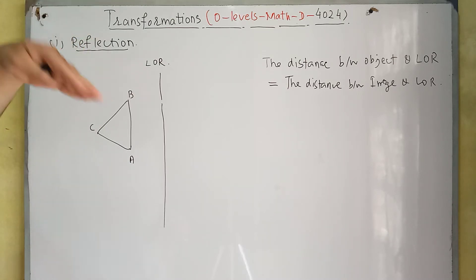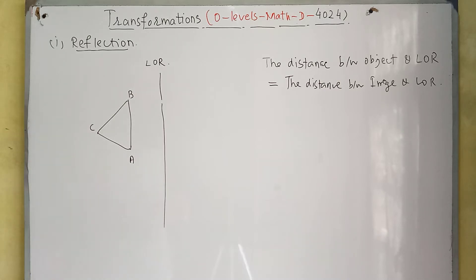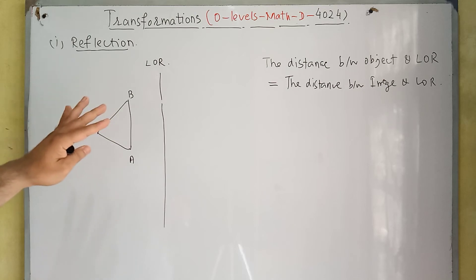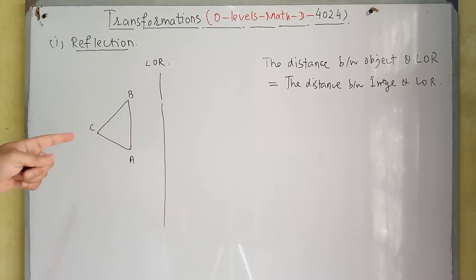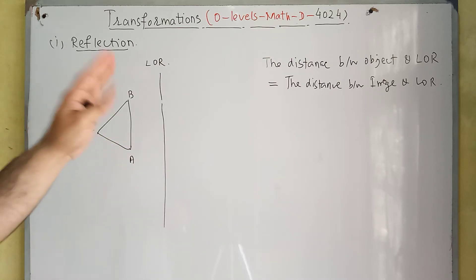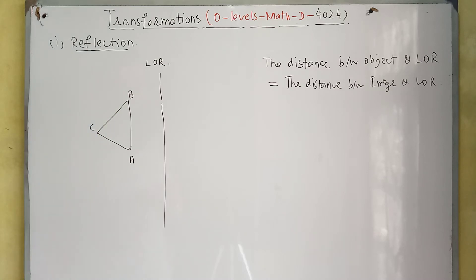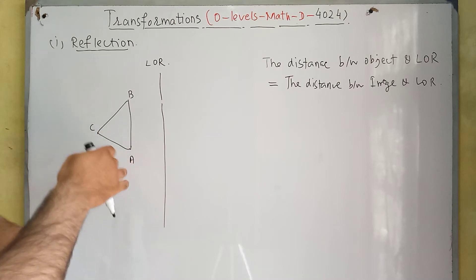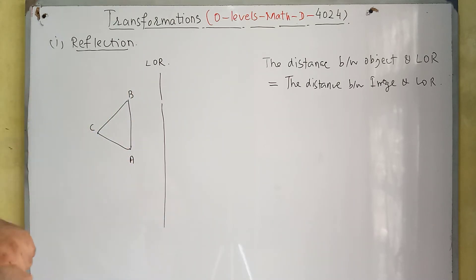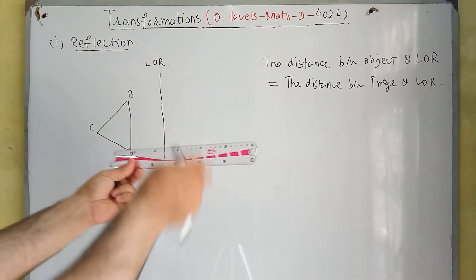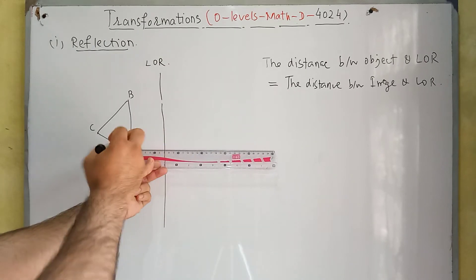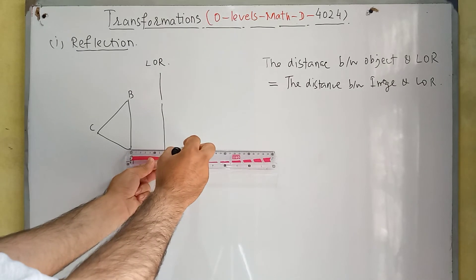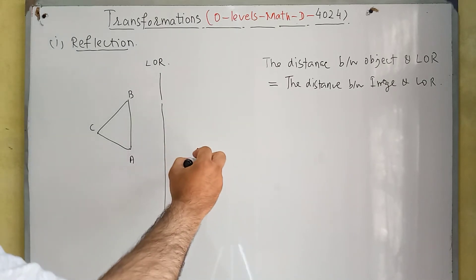In all types of transformations, we need to transform shapes point by point. If we have three points in this triangle A, B, and C, we are not going to reflect the shape all at once — we are going to reflect points individually. First we will reflect point A, then point B, then point C. The distance between point A and the line of reflection is seven centimeters, so the distance between its image and the line of reflection will also be seven centimeters. So its image will be here — A prime.